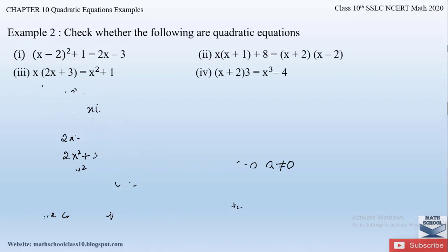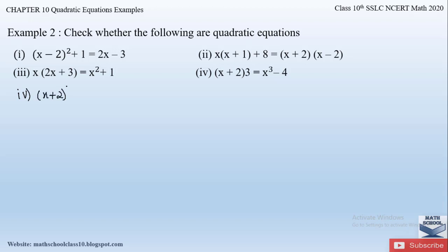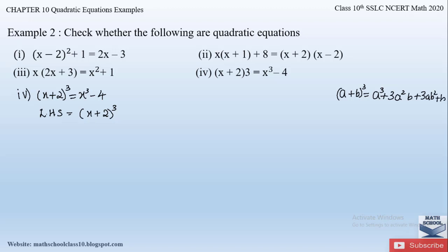Now let us solve the fourth part of example 2: (x + 2)³ = x³ − 4. Taking the left-hand side first: (x + 2)³ is of the form (a + b)³. The formula is a³ + 3a²b + 3ab² + b³. You should know these formulas very well to solve these kinds of problems.